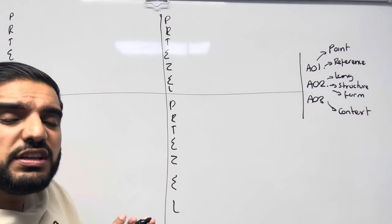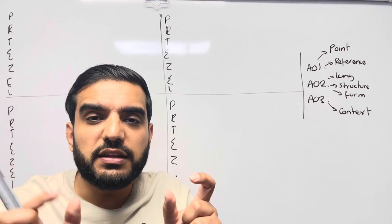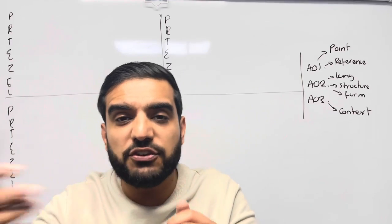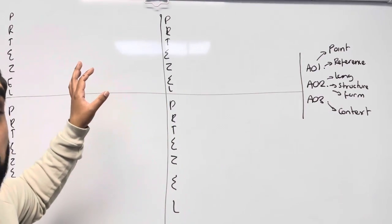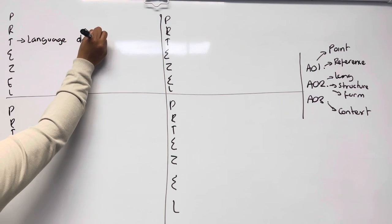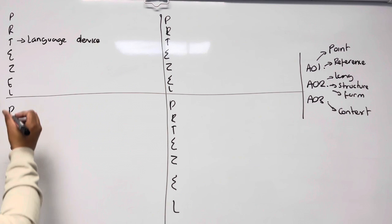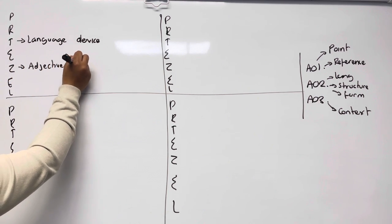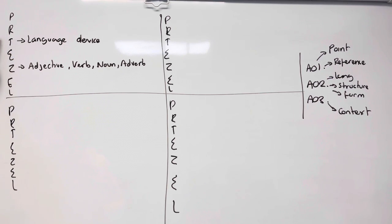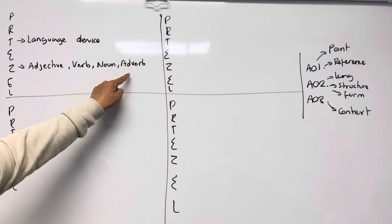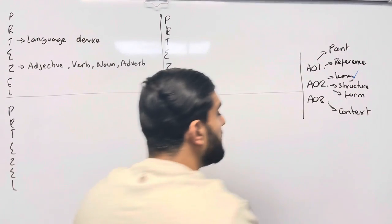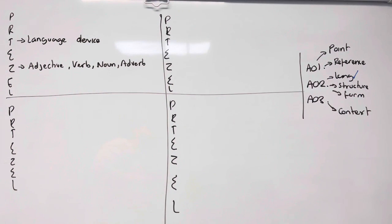In paragraph one you want to talk about the easiest stuff. Easy doesn't mean low quality — the quality always remains high — but we want to get started. I don't want you picking the hardest content first and getting stuck. So in paragraph one, for your technique, pick a language device and zoom in to either an adjective, verb, noun, or adverb. No context, no structure, no form — just that one element of AO2.